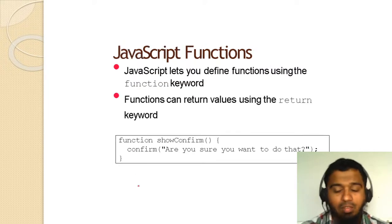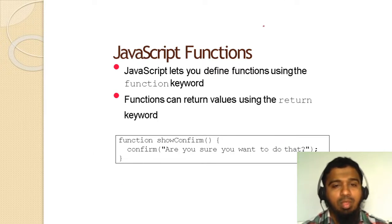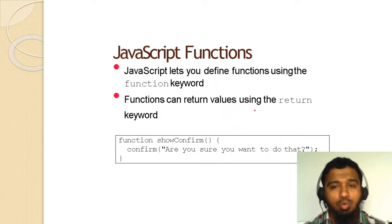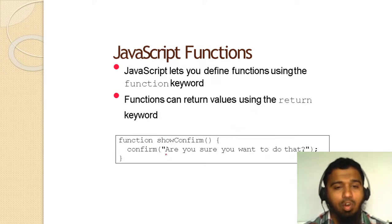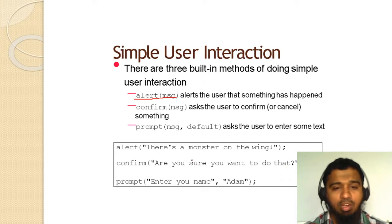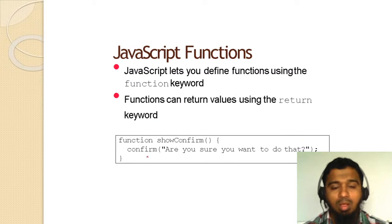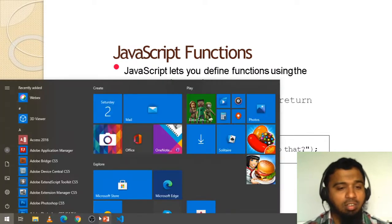Let me show you an example of a function. JavaScript lets you define a function using the function keyword, and functions can return a value using the return keyword. Here we write a function name and inside the function we write whatever we want — for example, confirm: 'Are you sure you want to do this?' Let's go back and do the practical.